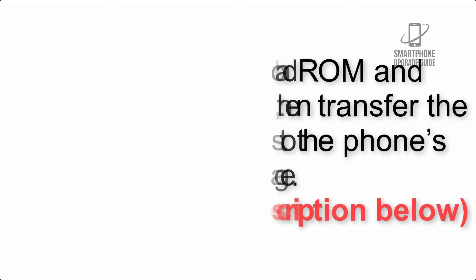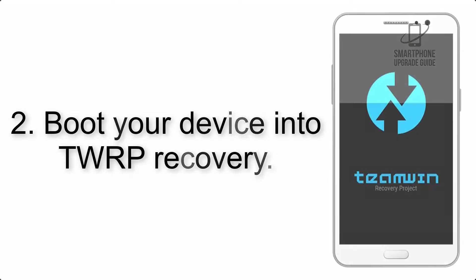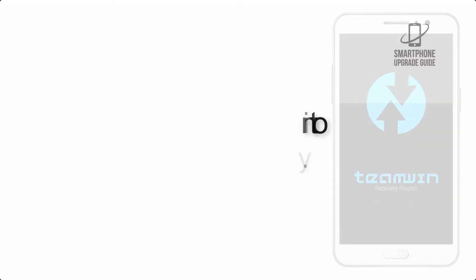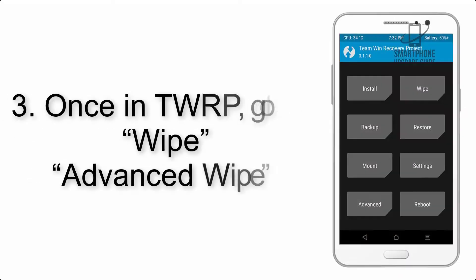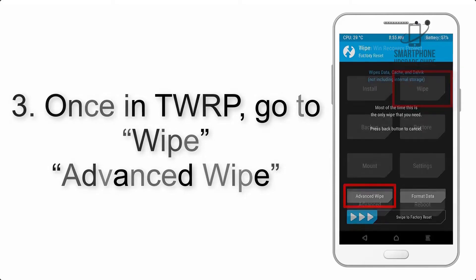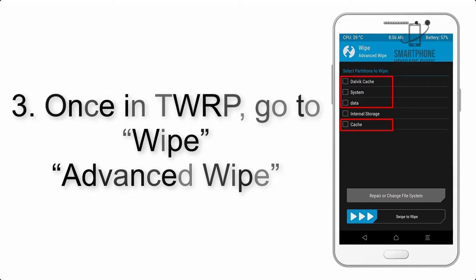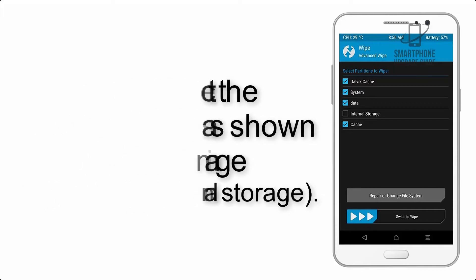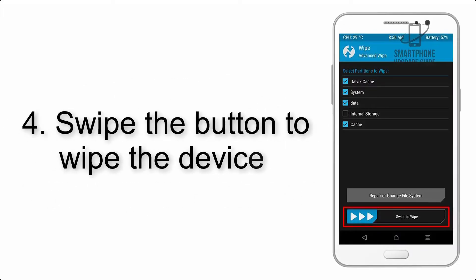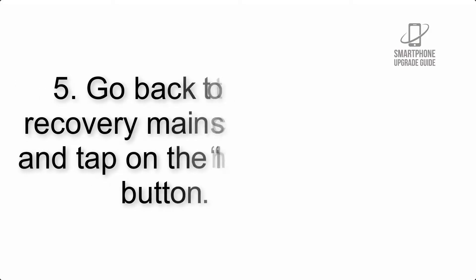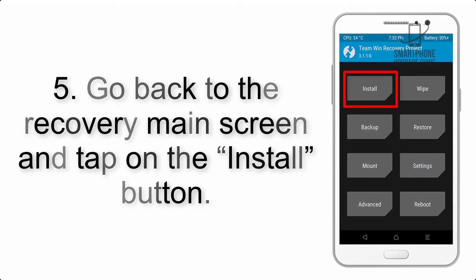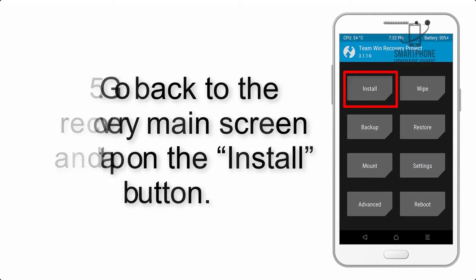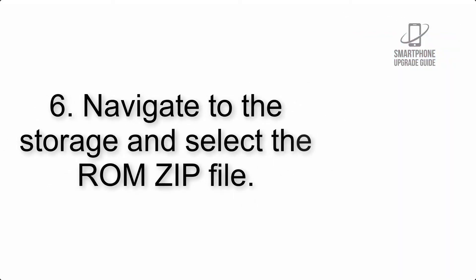Step 2: Boot your device into TWRP recovery. Once in TWRP, click on Wipe, then Advanced Wipe, and select the checkboxes as shown in the image, excluding internal storage. Step 4: Swipe the button to wipe the device. Step 5: Go back to the recovery main screen and tap on the Install button.